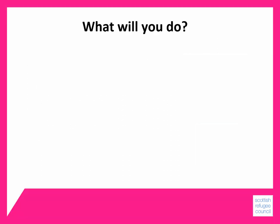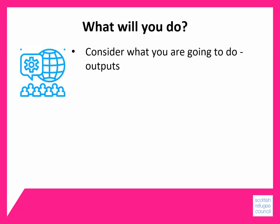Now think about what you're going to do. For example, delivering a community celebration to bring people together, or delivering ten weekly activity sessions for your members. These are called outputs — for more information see module 4.